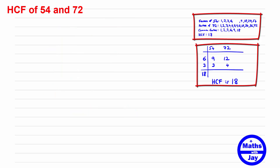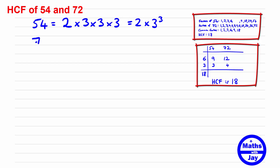This third method works well if you're comfortable writing a number as a product of prime factors. Starting with 54: 2 goes in giving 27, then 3 goes in giving 9, then 3 again — so 54 is 2 times 3 cubed. For 72: 2 goes in giving 36, 2 again giving 18, 2 again giving 9, and 9 is 3 times 3 — so 72 is 2 cubed times 3 squared.